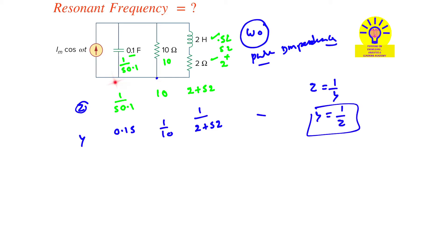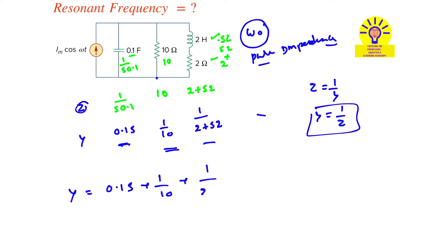Since the components are in parallel, the admittances are added. So the overall admittance Y equals the sum of all admittances: Y = 0.1s + 1/10 + 1/(2 + 2s).